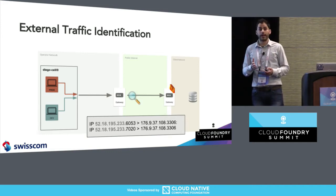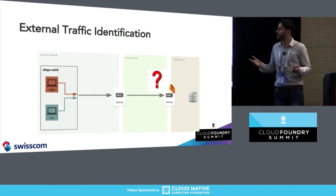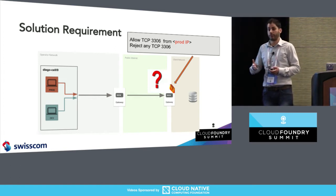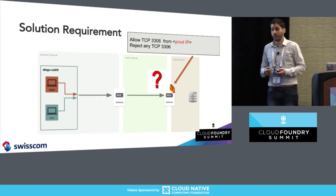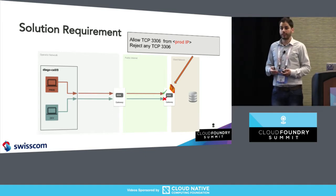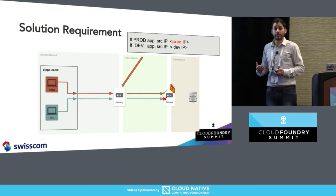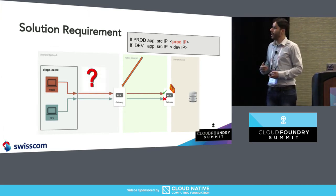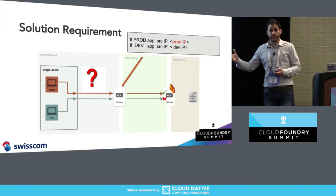When we go outside the operator gateway, the external IP becomes a public IP of the operator. So the traffic goes to the gateway and the service, and we ask: how can we put a rule that will say I want to allow traffic only from my production app? This is also the requirement from the customer, who wants to put a traditional firewall rule. In order to do that, we need to split the traffic all the way through from the source. We need to be able to put in our operator gateway another rule that will say: if I have a production app, please put this source IP address.